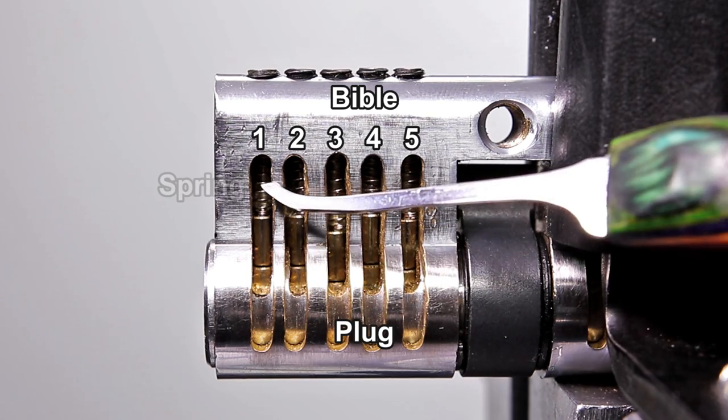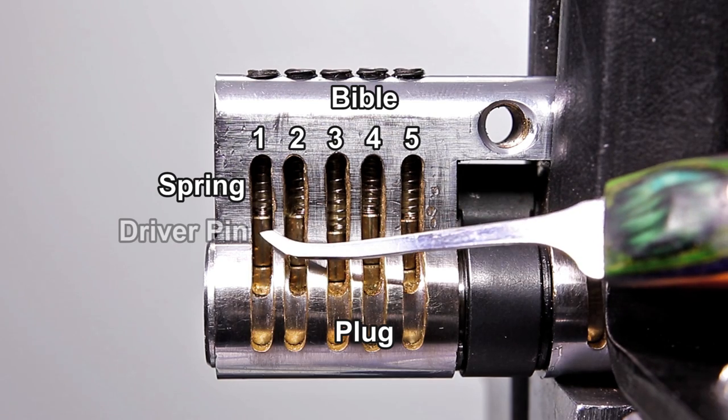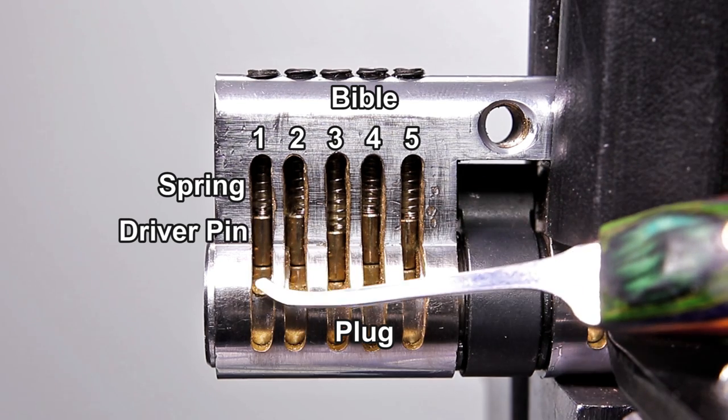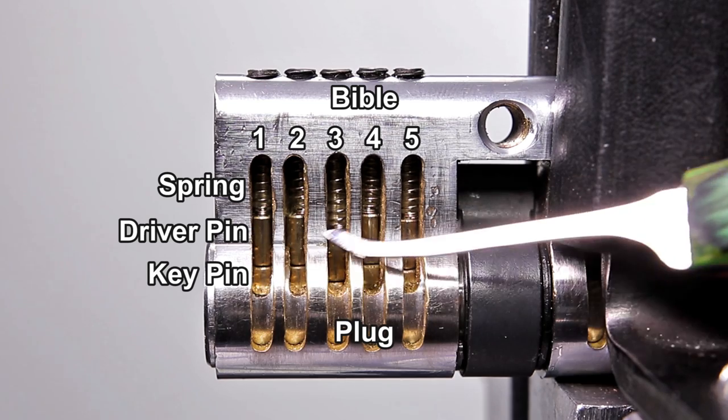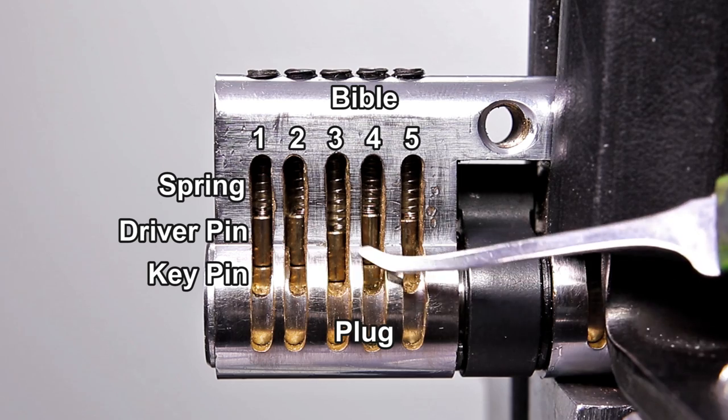Each chamber contains a spring that is pushing down on two pins. The spring is pushing down on the driver pin, and the driver pin is pushing down on the key pin. How a lock works is the driver pin is being pushed down by the spring and sits recessed in the plug here.